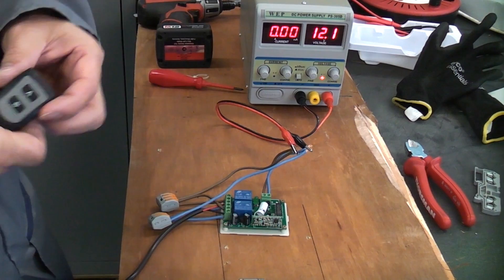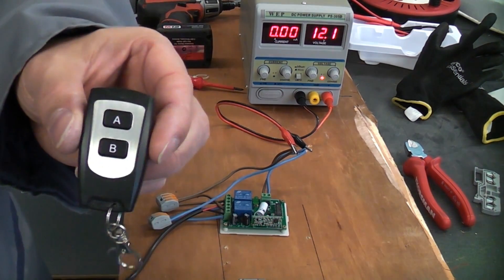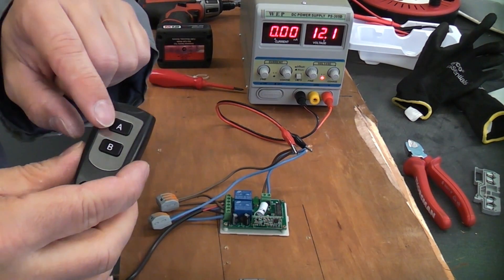This is a 12 volt remote relay. It came with a key fob like that. I actually bought this off eBay. You'll see that we've got A on there and B.